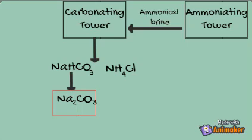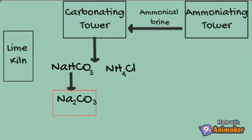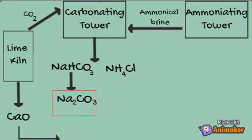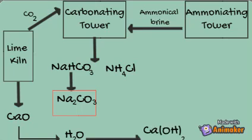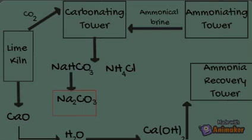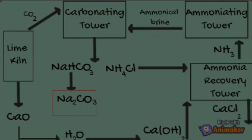Now we manufacture our raw materials. We introduce the Lime Kiln chamber where calcium carbonate is heated, producing carbon dioxide which goes to the Carbonating Tower. Calcium oxide is also produced, which reacts with water and goes to the Ammonia Recovery Tower. The ammonium chloride produced in the Carbonating Tower also goes to the Ammonia Recovery Tower, where ammonia is recovered and reused while the other products go out.